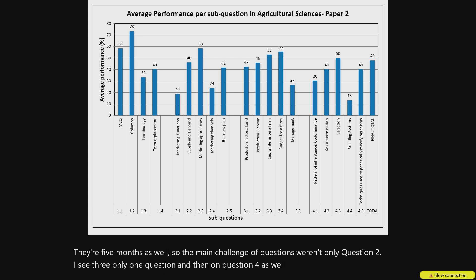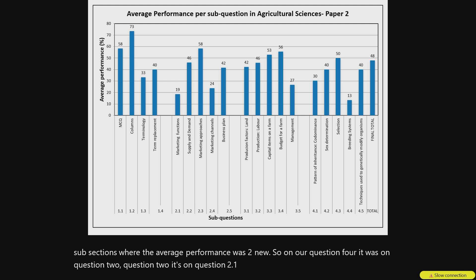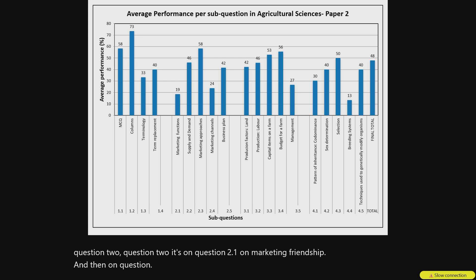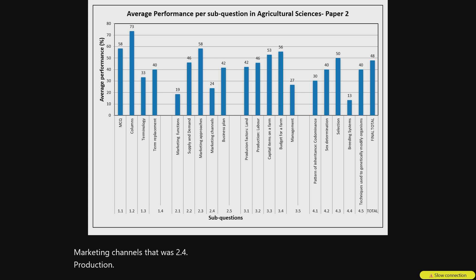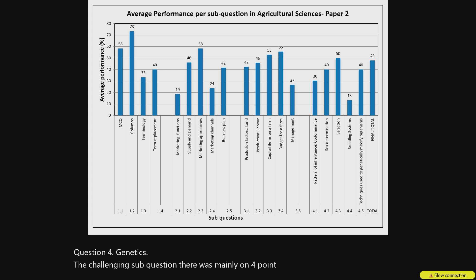I will be looking at some of those sub-sections where the average performance was too low. On Question 2, it was on 2.1 on marketing functions, and then on 2.4 on marketing channels. On Question 3, production factors, mostly the average is good, but there was just one sub-question on 3.5 — management as a production factor. On Question 4, Agrik Genetics, the challenging sub-question was mainly on 4.4, the breeding systems, where the average is at 13. It's too low.